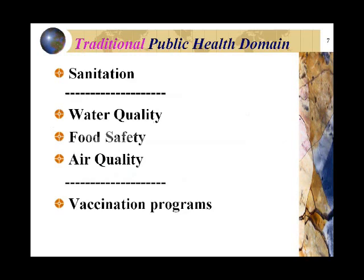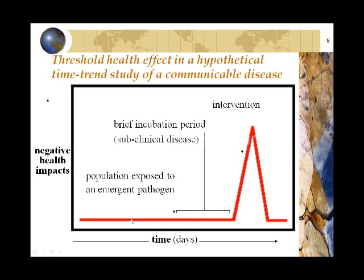Traditionally in public health, we have focused for hundreds of years on sanitation, water quality, food safety, air quality, and vaccination programs. Typically we see low endemic levels of communicable diseases, then once a pathogen enters a population with a defined incubation period, we see a spike in incidence of illness, intervene, and hopefully see a decline. The idea is to intervene as early as possible before the major spike increases.